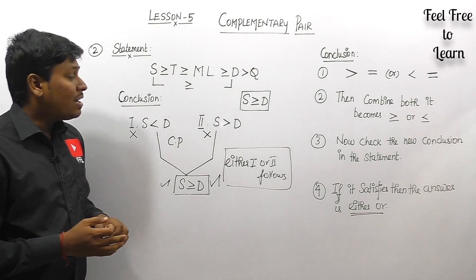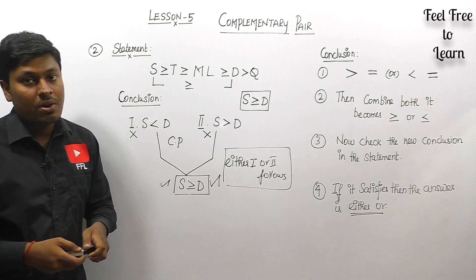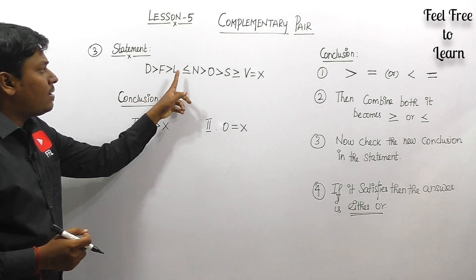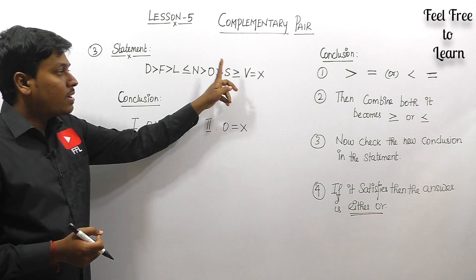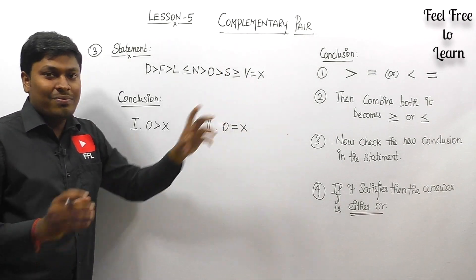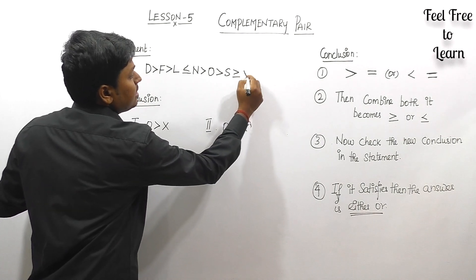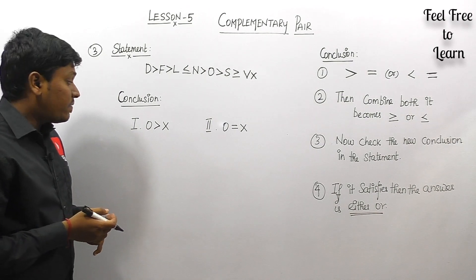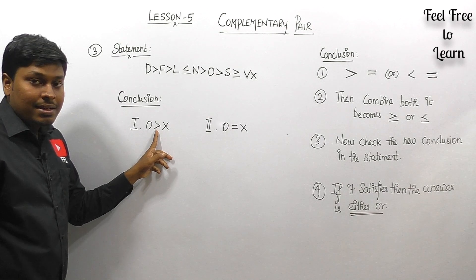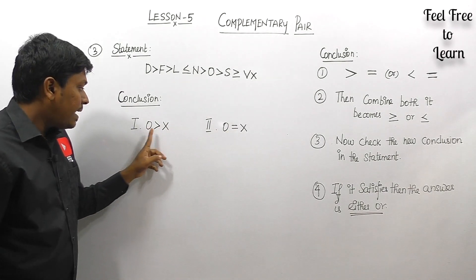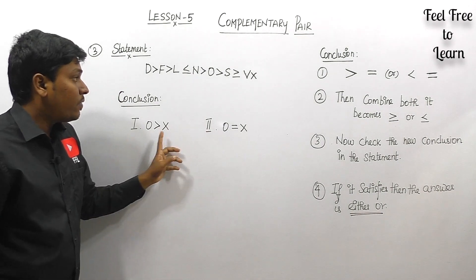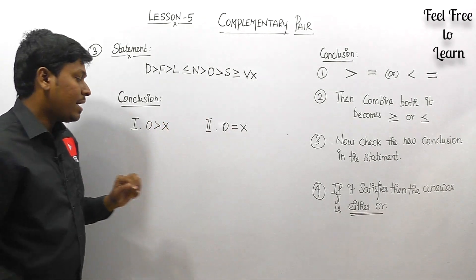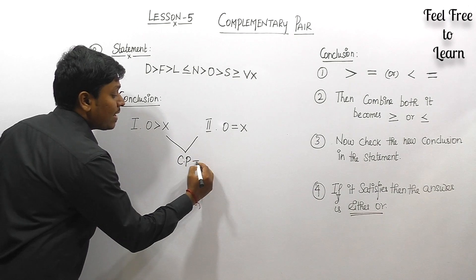Now the last question — an example where even though it's a complementary pair, it does not follow the complementary rule. Statement: D > F > L ≤ N > O > S ≥ V = X. So V and X are equal, written as VX. Conclusion one: O > X, and conclusion two: O = X. Both letters are same and one is greater than, one is equal to — so by looking at the conclusions, it's a complementary pair.